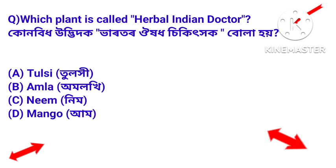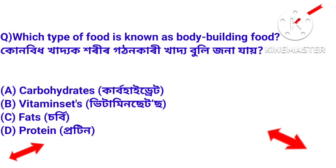Next question: which plant is called the herbal doctor? Answer: Amla. Amla is known as the herbal doctor. Which type of food is known as body-building food? Answer: Protein. Protein is known as body-building food.